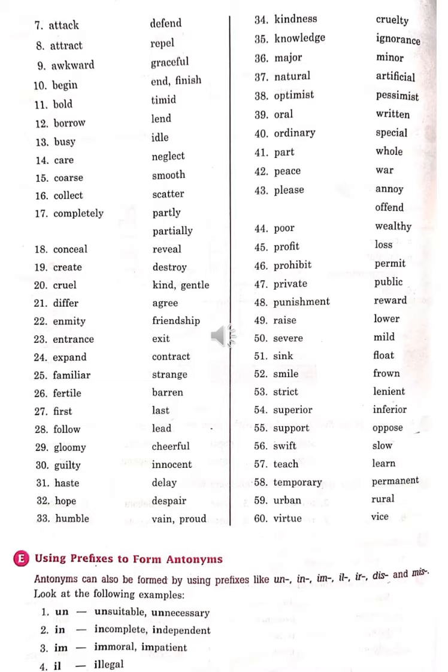Humble (Udar) – Vain, Proud (Abhimani). Kindness (Udarta, Dayaluta) – Cruelty (Nirdayata). Knowledge (Gyan) – Ignorance (Agyanta). Major (Mahatavpurn) – Minor (Chhota sa).